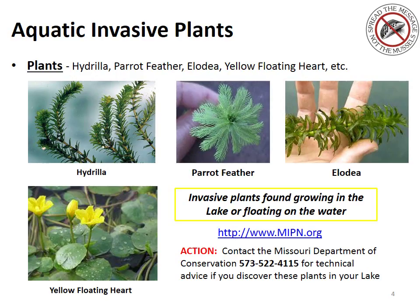Aquatic invasive plants come in many different forms, but four different plants to look for in your lake that may be floating on the water or growing nearby are hydrilla, parrot feather, elodea, and yellow floating heart. Please contact the Missouri Department of Conservation for technical advice if you discover any of these plants in or near your lake.